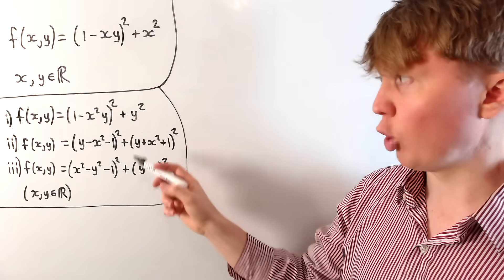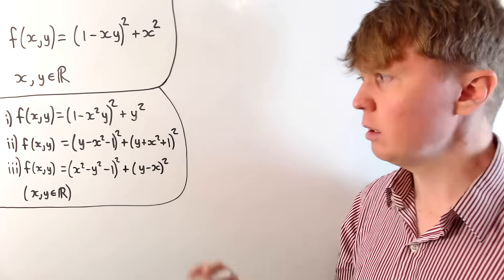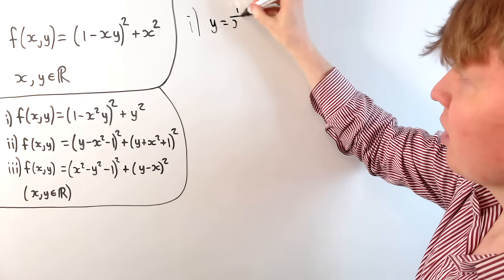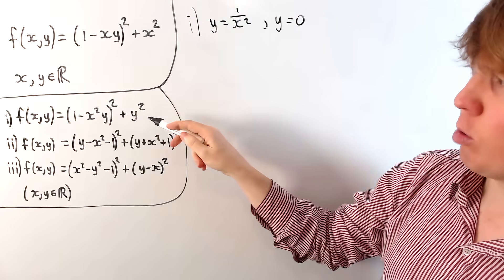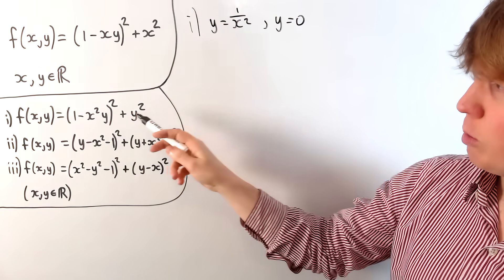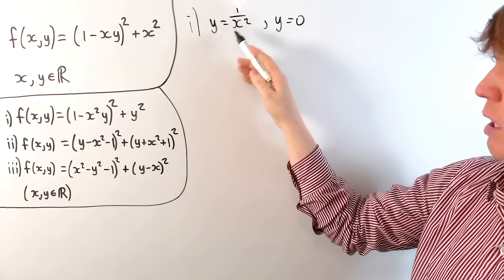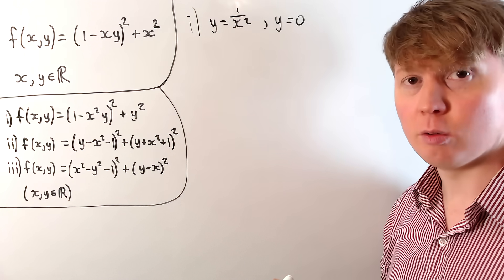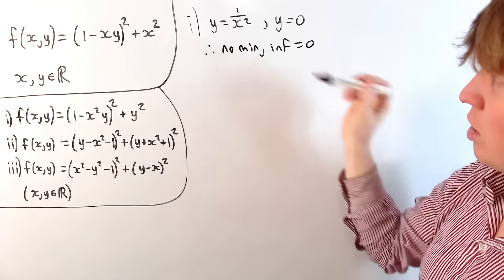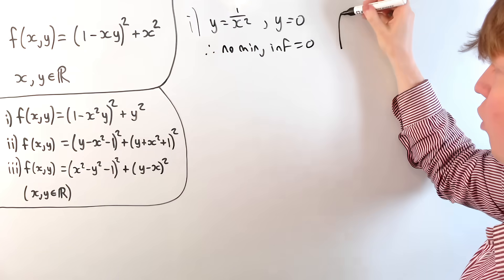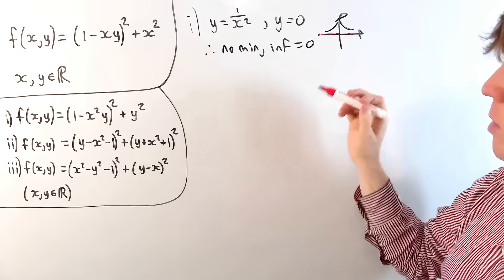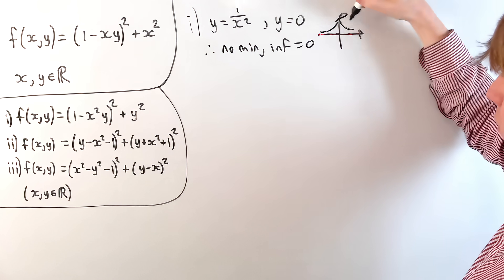So it seems to have the same sort of property that for one-variable functions is reserved only for non-polynomial functions, unless we restrict the domain. We'll understand what's going on by looking at a few more examples — all for all real values of x and y. For our first function, if we want it to equal 0, we would need y = 1/x², and we'd also need y = 0 for the y² term to vanish. So it's greater than or equal to 0, but it's not possible to make it equal 0, just like before, because we can't have both y = 1/x² and y = 0.